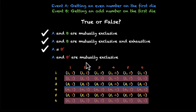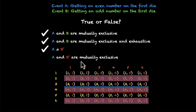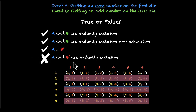Statement 4: A and B' are mutually exclusive. For mutual exclusivity there must be no overlap, but we just showed A and B' are completely identical — there is complete overlap. This statement is false; in fact it couldn't be more false. A and B' are equal, so they cannot be mutually exclusive.